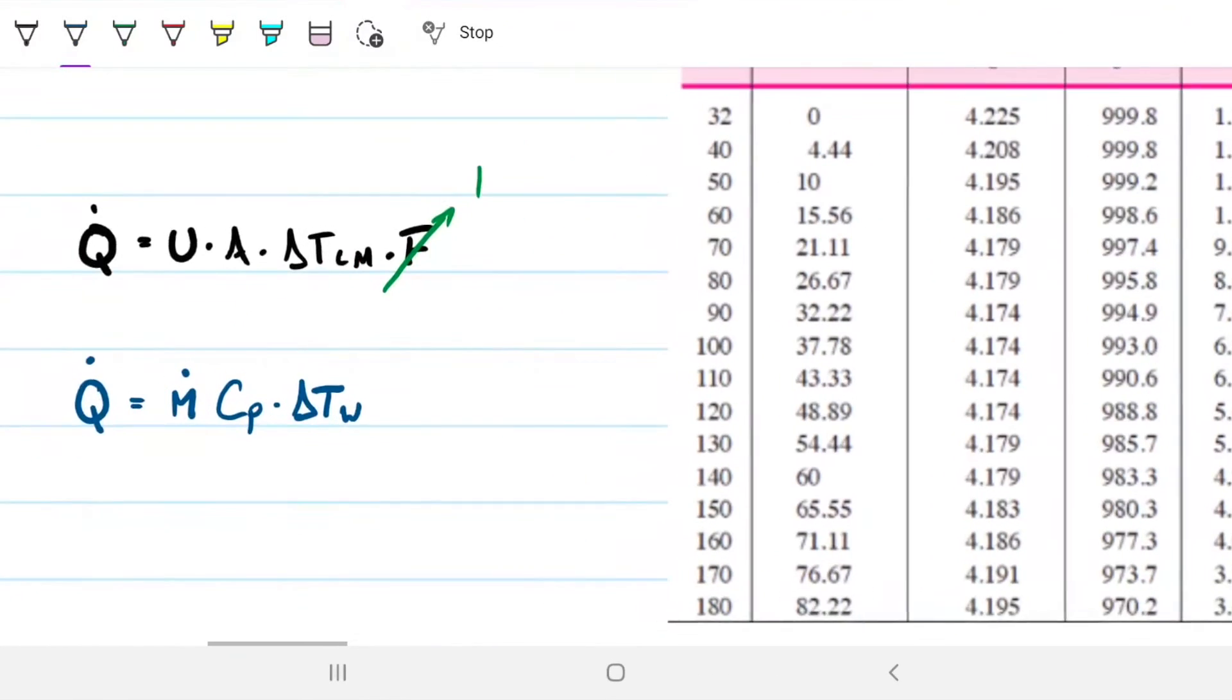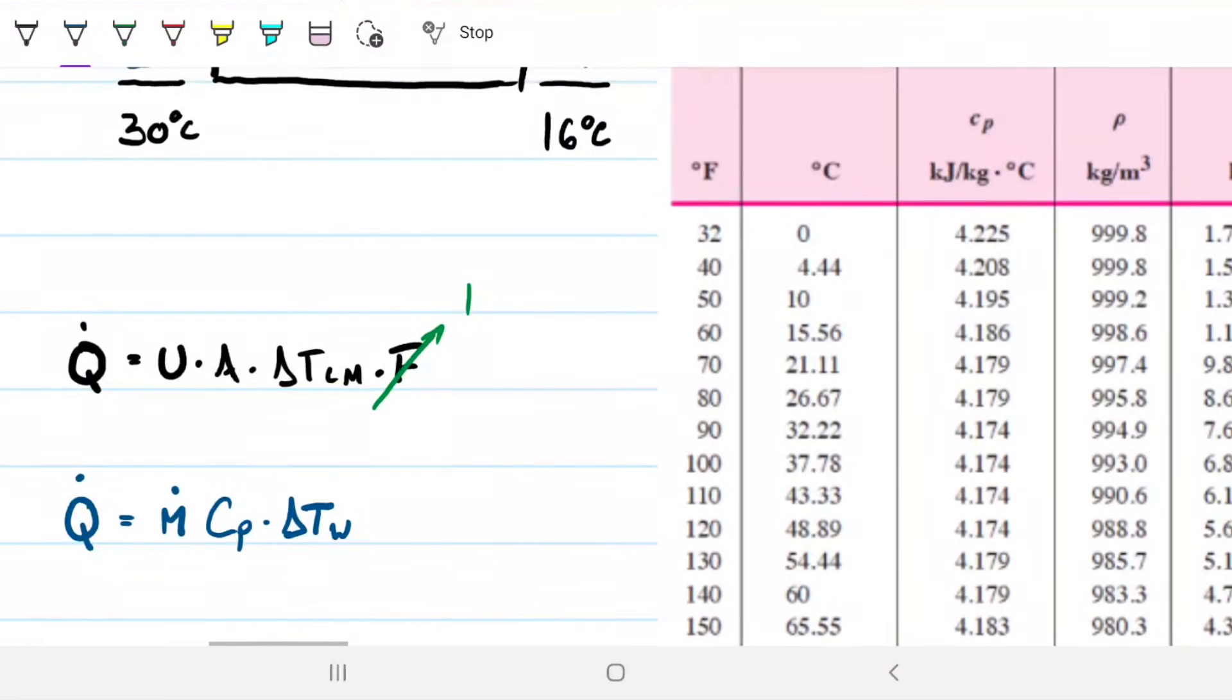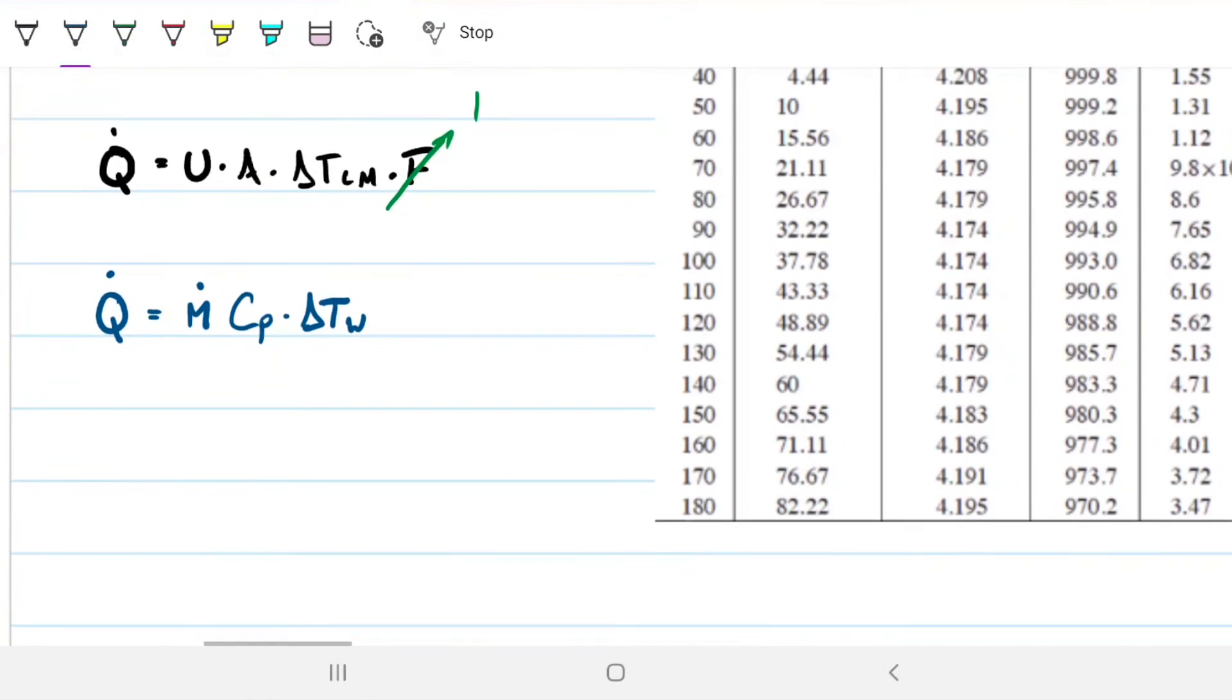And I can look over here, what's my bulk temperature? I don't know my bulk temperature yet. Let's do that. My bulk temperature will be T bulk will be 20 plus my 34 Celsius divided by 2, which gives me 27, 27 Celsius. So this is where I'm going to grab my properties for this problem, right? 27 Celsius.